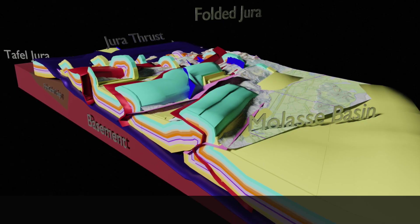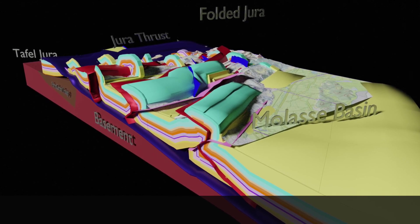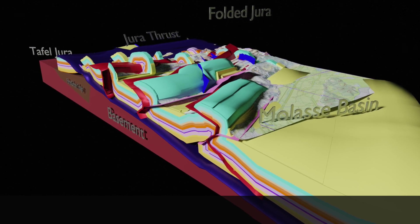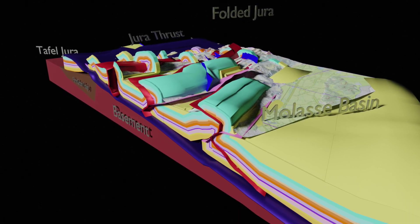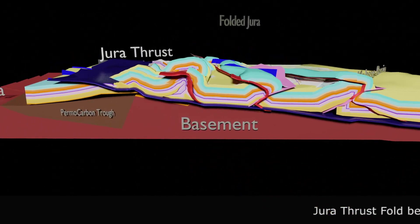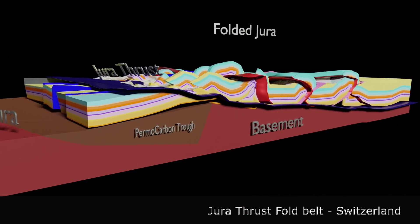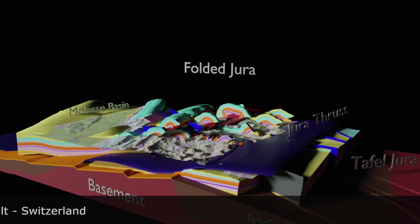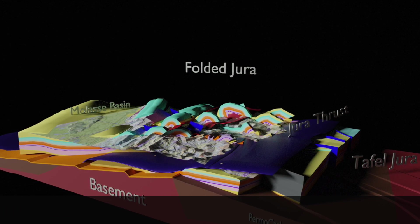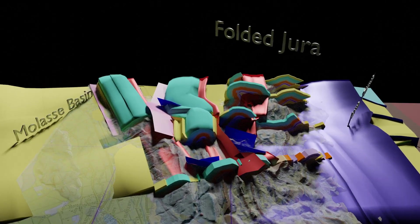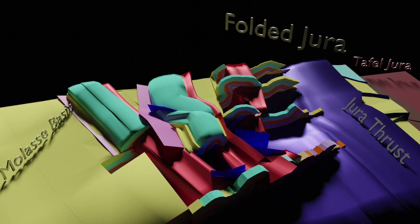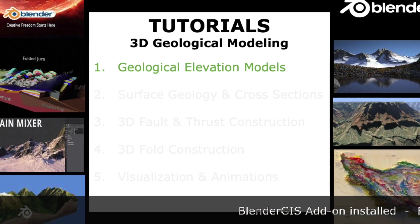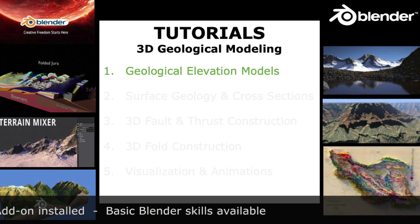As a showcase, I take the Jura Mountains in Switzerland, a fold-and-thrust belt in the northern foreland of the Alpine Orogeny. Other examples can be found in the videos referenced in the description below. The first tutorial shows how to project geologically relevant data onto digital elevation models.